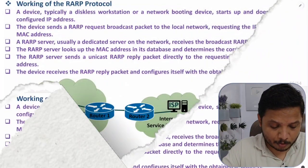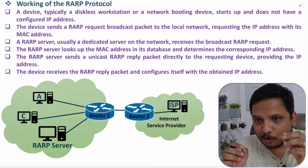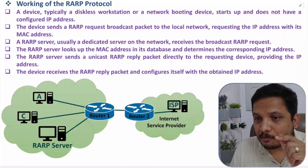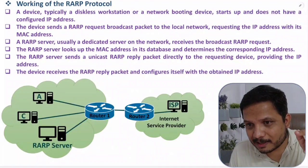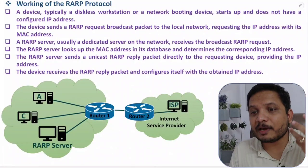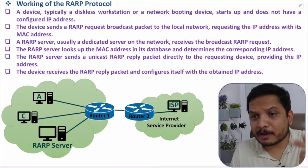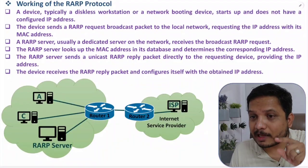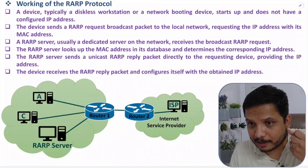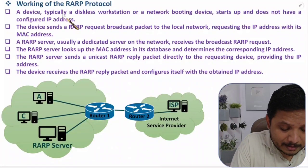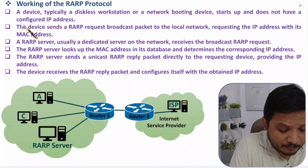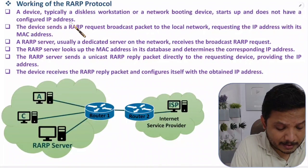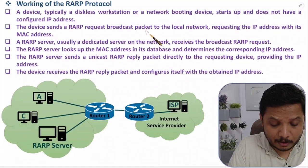Now let us look at how RARP protocol works. In RARP, what we do is provide a configured IP address to a given device. If a device — typically a workstation or network booting device at startup — does not have a configured IP address, it uses RARP to obtain one. That device will send a RARP request as a broadcast packet to the local area network.